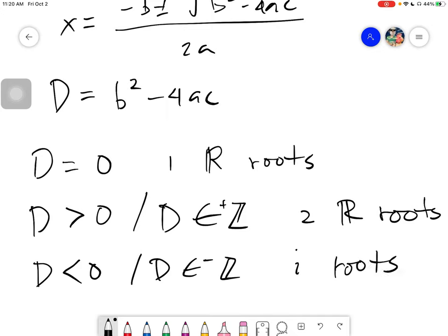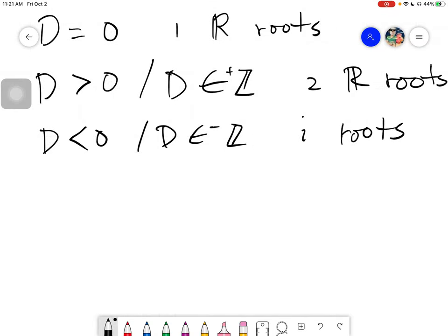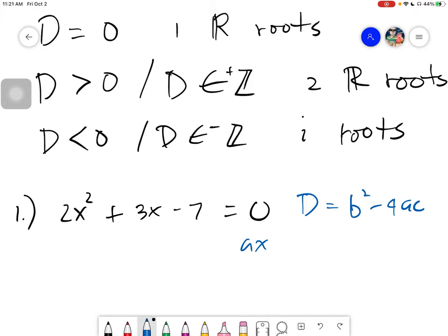So those are the cases for this one. If it's equal to 0, if it's positive, and if it's negative or less than 0. So let's have now any given quadratic equation. For example, we have 2x squared plus 3x minus 7, equal to 0. Now the discriminant, the formula for the discriminant, which is of course b squared minus 4ac, this will only work if and only if your given is arranged in the standard form or the general form. ax squared plus bx plus c is equal to 0.